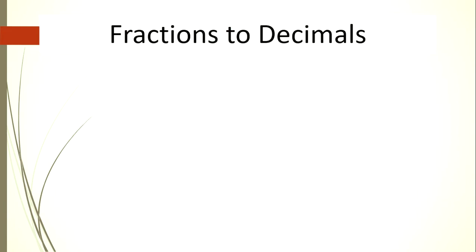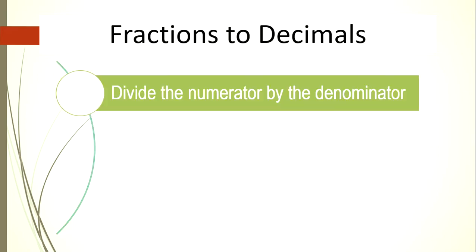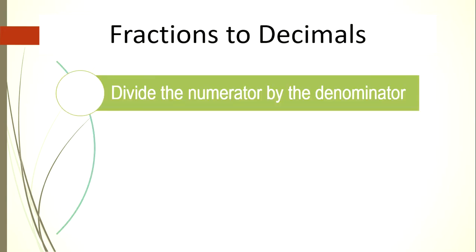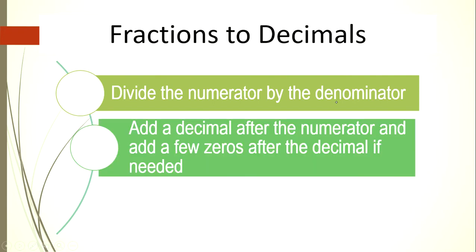Let's now try to convert fractions to decimals. To convert a fraction to a decimal, follow these steps. First, divide the numerator by the denominator. Just to recap, the numerator is the number on top of the fraction bar and the denominator is the one below. After dividing, add a decimal after the numerator and add a few zeros after the decimal if needed.